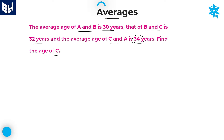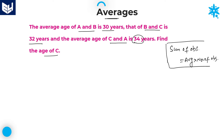In each and every sentence, the average of A and B, average of B and C, and average of A and C are all given. Whenever averages of any two members are given, it is very easy to calculate their sum, because sum of observations equals average multiplied by number of observations. So sum of A and B equals 30 into 2, which is equal to 60.